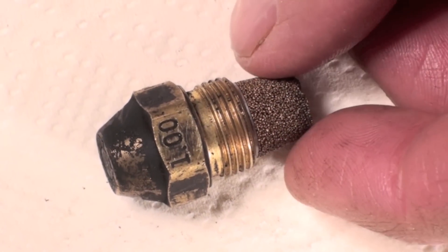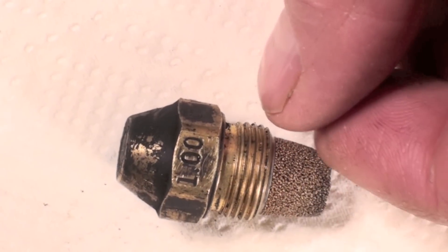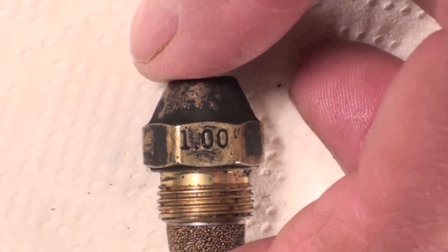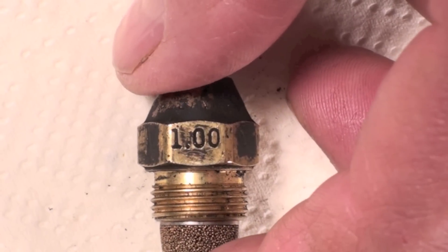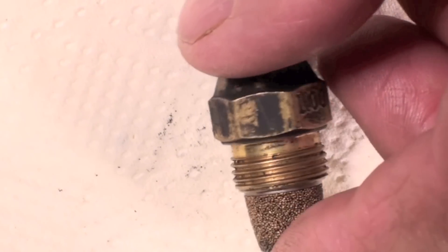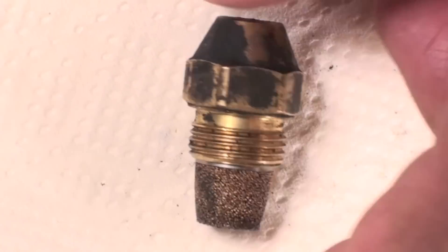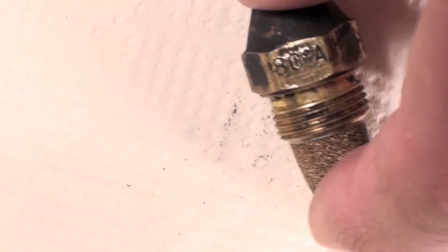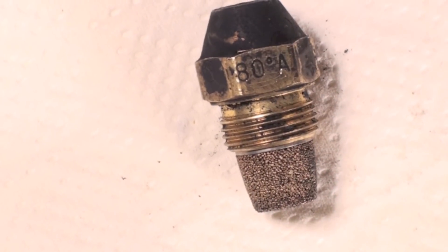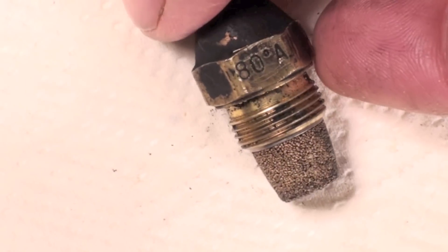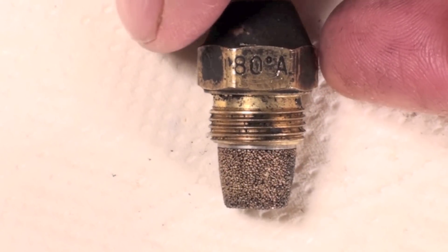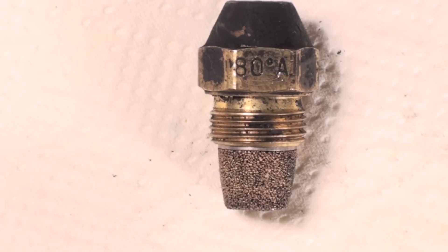I've cleaned off this nozzle. You can see on one part of the flat it says 1.00, that's one gallon per hour. If you go around, you'll find another spot that says the angle of spray is 80 degrees. Whether it's an A, a W, or what - the A is a semi-solid.